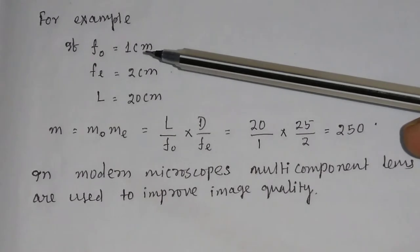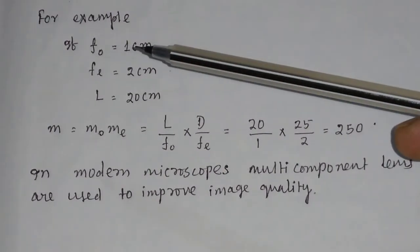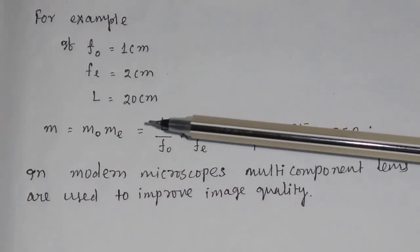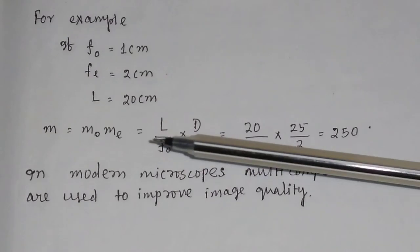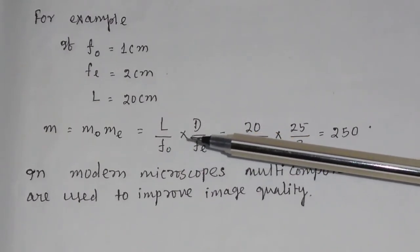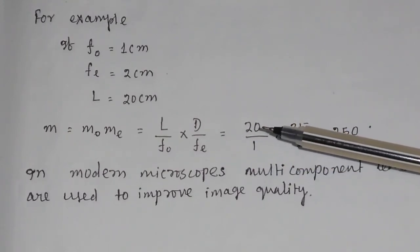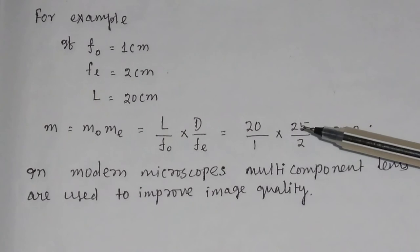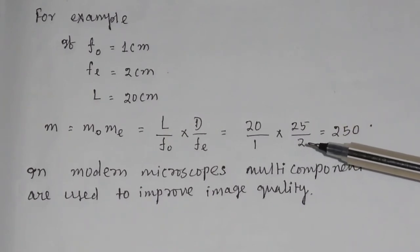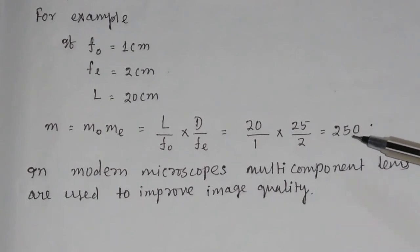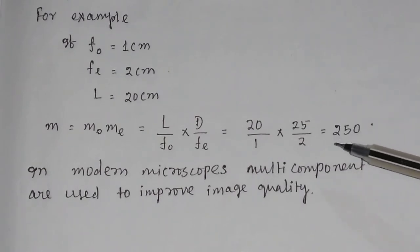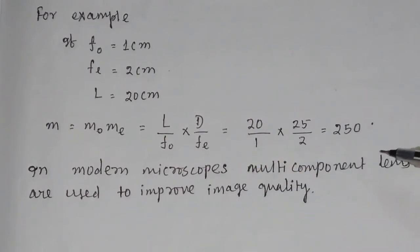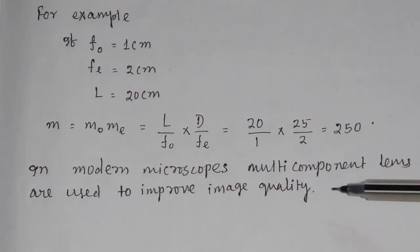For example, if F0 equals 1 cm, FE equals 2 cm, and the tube length L equals 20 cm, then the magnification M = (L/F0) × (D/FE) = (20/1) × (25/2) = 250. So the magnification will increase the object 250 times. In modern microscopes, multi-component lenses are used to improve large image quality.